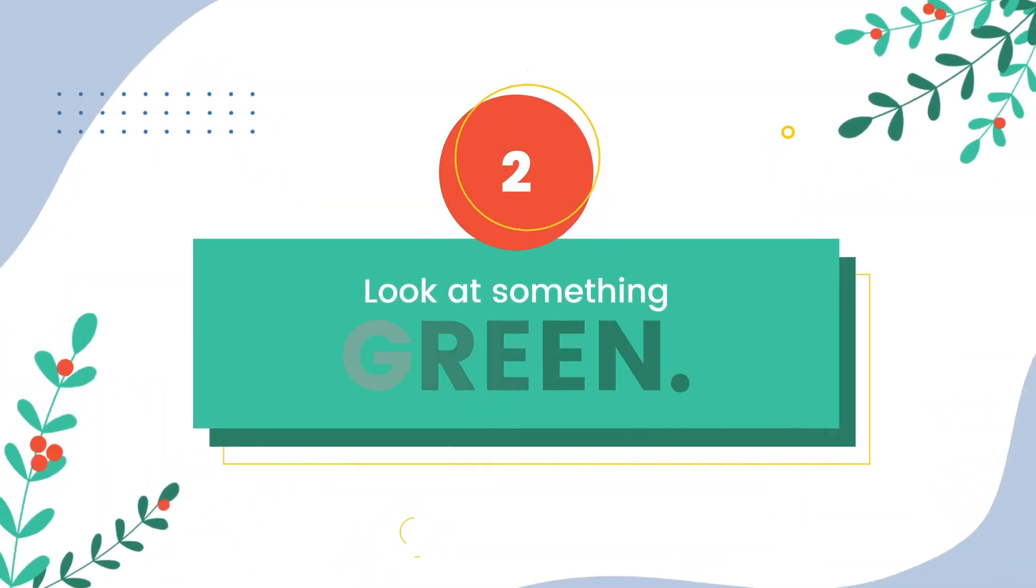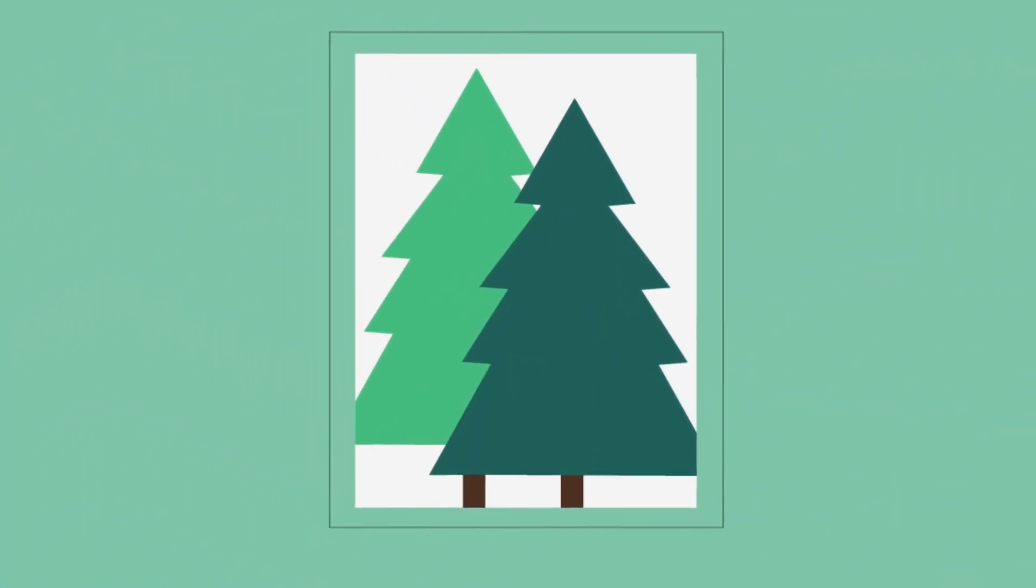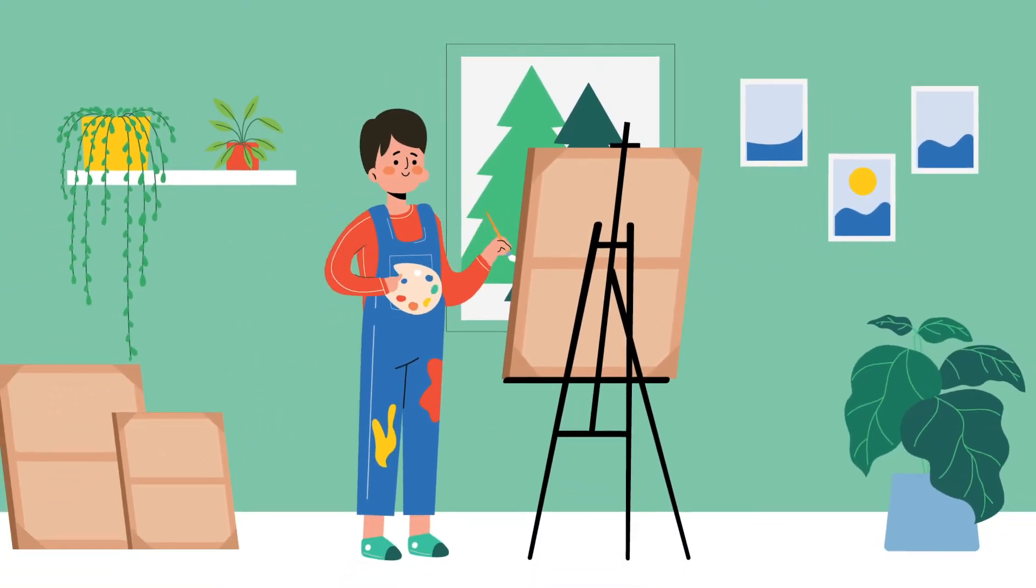Number two, look at something green. A German study found out that people tend to be creative when glancing at the color green for two seconds before doing a creative task.